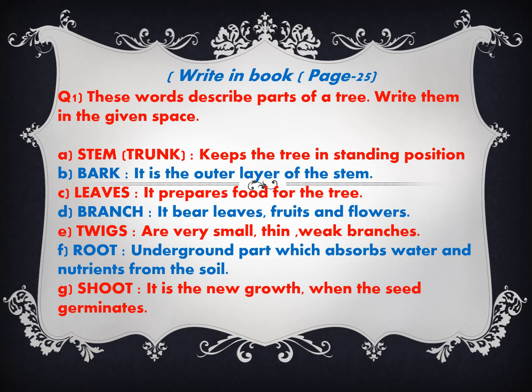These words describe parts of a tree — write them in your book on page 25. Stem or trunk: keeps the tree in a standing position. Bark: the outer layer of the stem. Leaves: prepare food for the tree. Branch: bears flowers, leaves, and fruits. Twigs: very small, thin, weak branches. Root: the underground part that absorbs water and nutrition from the soil. Shoot: the new growth when a seed germinates.